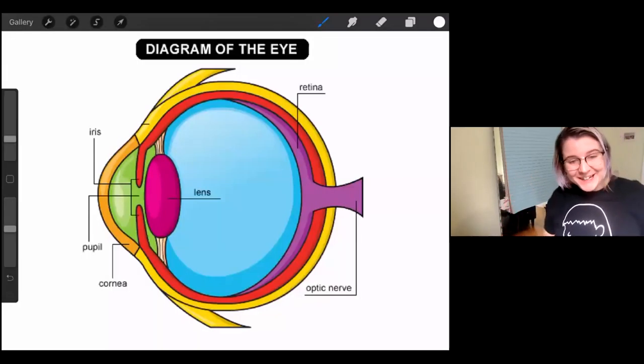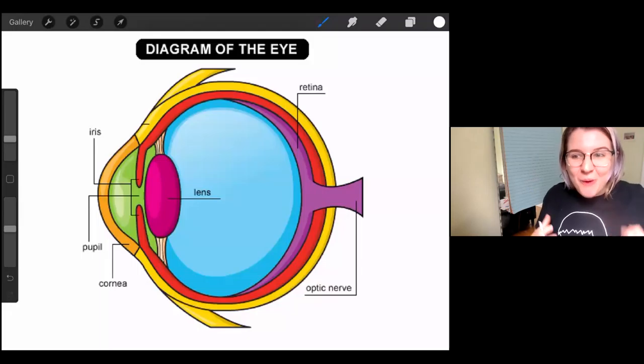All right, here we go. Here's a representation of what our eyes look like on the inside. Let's take a look at one word at a time and talk about what it does to help us see.